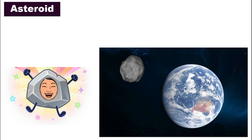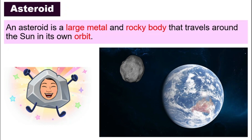How about asteroids? An asteroid is a large metal and rocky body that travels around the sun in its own orbit. They are just like meteoroids, but they are a lot bigger and they don't float around freely — they have their own orbit. That makes sense, because meteoroids come from asteroids; meteoroids are just fragments that come from asteroids.